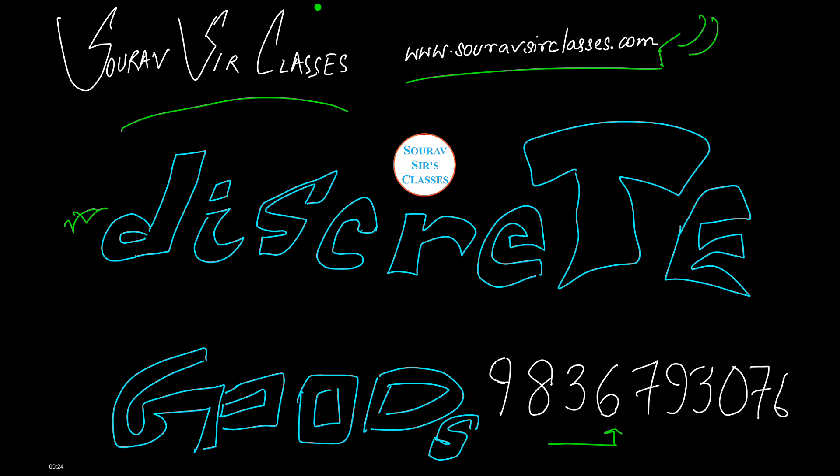So before I jump onto the tutorial and make the indifference curve and everything, let us first define what do you mean by discrete goods. Now, some goods are available to us only in discrete amounts.